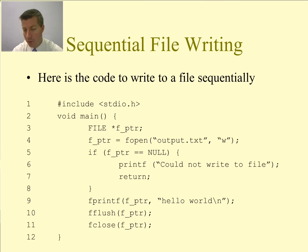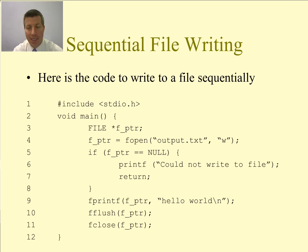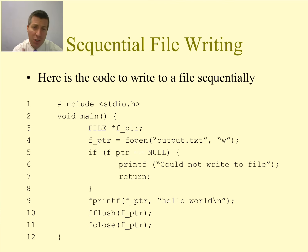On line four, I have set that pointer equal to a function called fopen. fopen takes two parameters — two char stars — and it returns a file pointer. The first parameter is going to be the name of the file you would like to write to. In this case I am writing to a file called output.txt. The second parameter is a "w" which stands for writing — we are opening that file for writing.